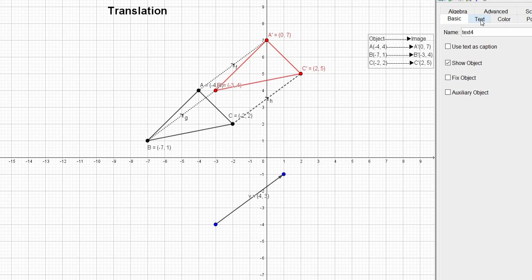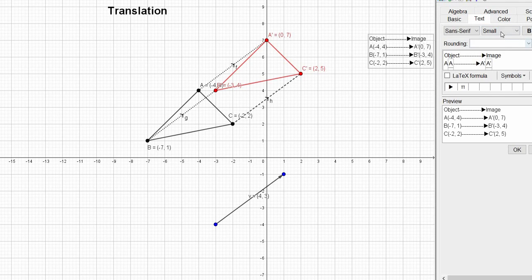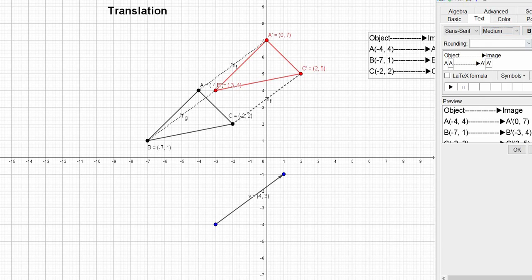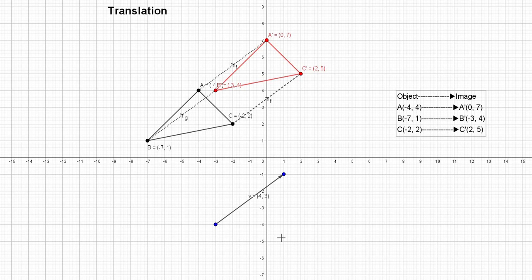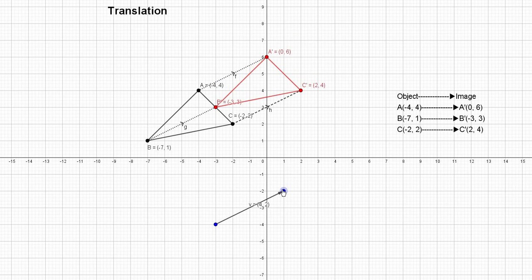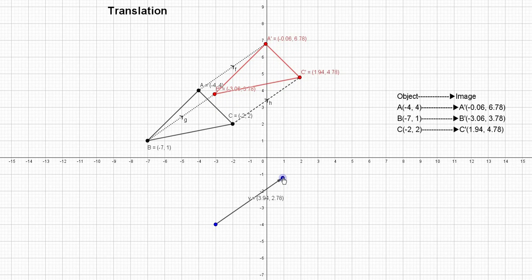Now we'll see over here there will be changes in the position. Okay, see here if I change the position vector, we can see changes in the coordinates also, coordinate of the image, but the object has been fixed.